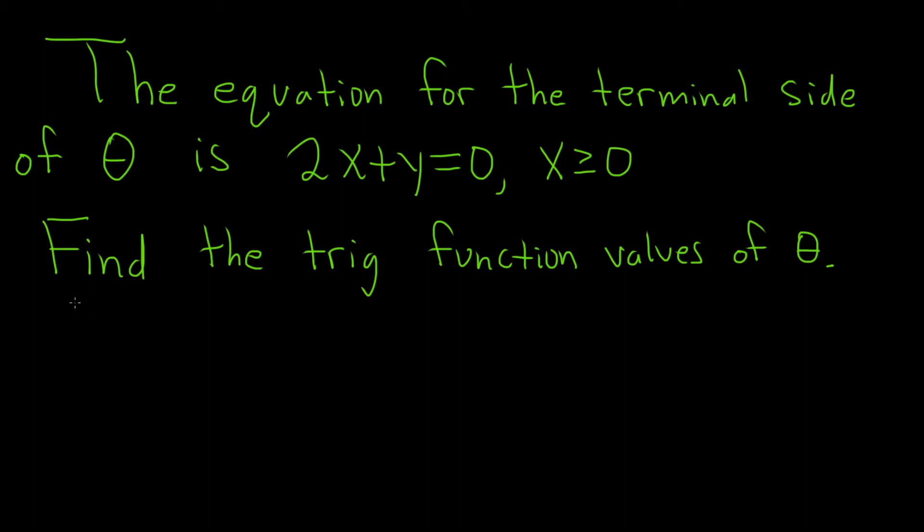We're given the equation for the terminal side of theta: 2x plus y equals 0, where x is greater than or equal to 0. We're being asked to find the trig function values of theta. So let's work through this carefully.